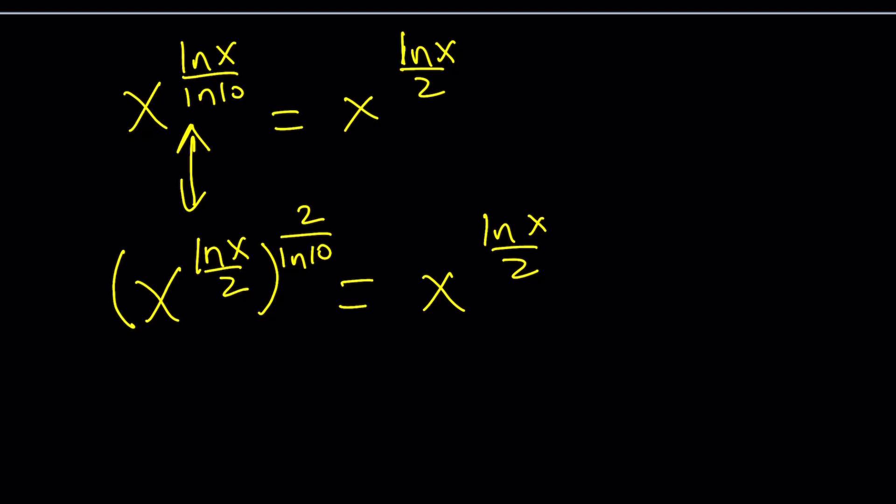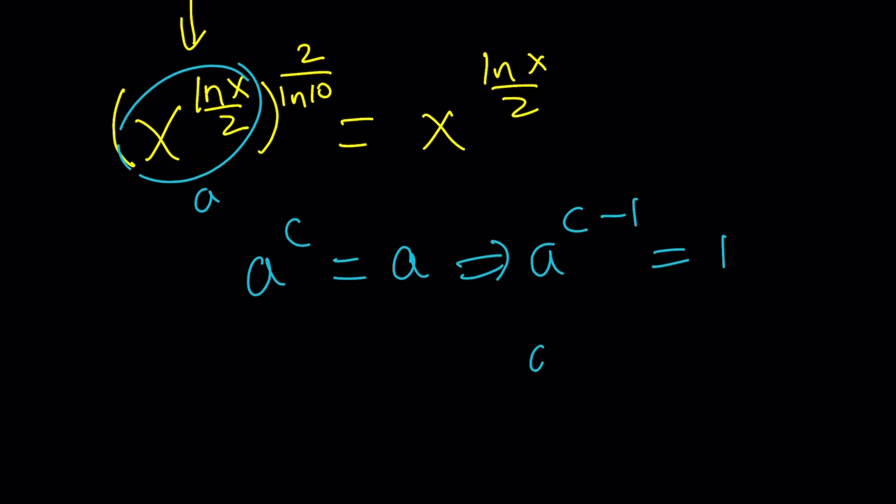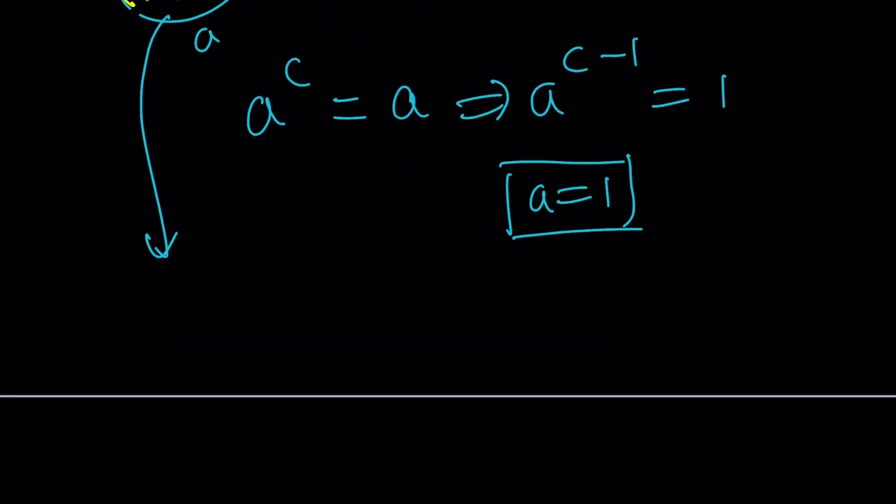Well, think about it this way. If this is called a, then I have a to the power constant equals a. Well, this just means a to the power constant minus 1 equals 1. And remember, the same cases, either a is 1 and c minus 1 is real number. If a is negative 1, and then go through all the cases. The only case that's going to help us is this one, a equals 1. So that's a conclusion, which means from here, x to the power ln x over 2 equals 1. But we do want complex solutions. So let's complexify this.